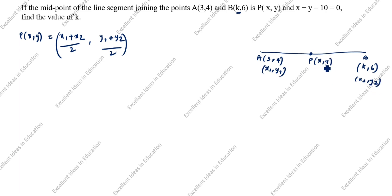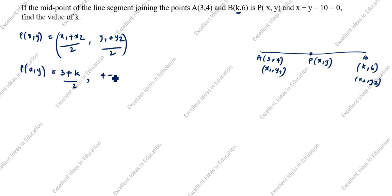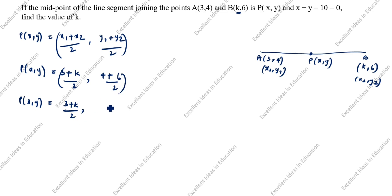We will take the second point as x2 comma y2. P(x, y) is equal to — x1 value is 3 plus x2 value is k, divided by 2, comma y1 value is 4 plus y2 value is 6, divided by 2. That gives 3 plus k divided by 2, comma 10 divided by 2.